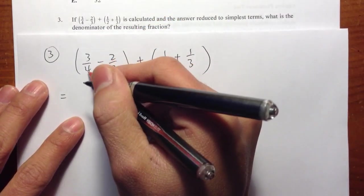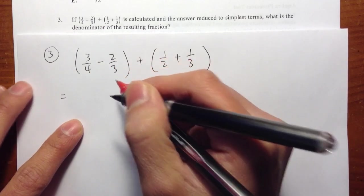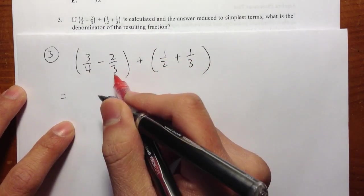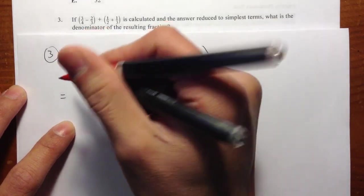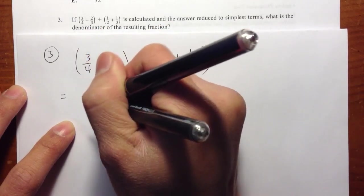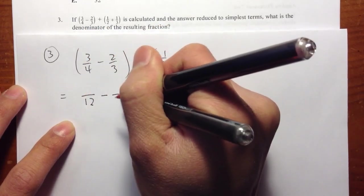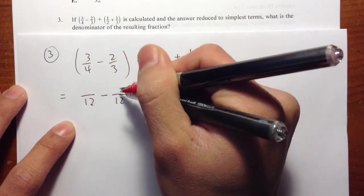So let's take a look at 4 and 3. The least common multiple of 4 and 3 is 12. So what we are going to do is, I would like to change both fractions to something over 12, something over 12.